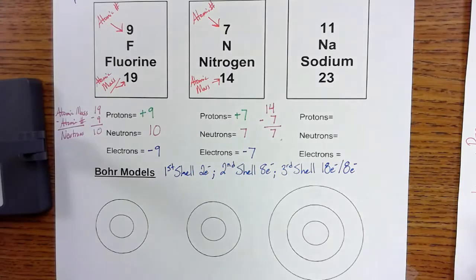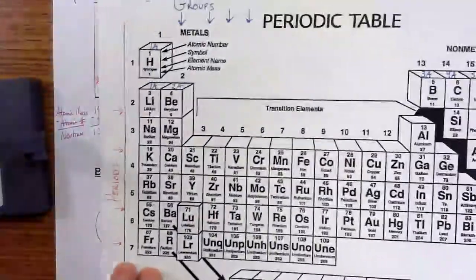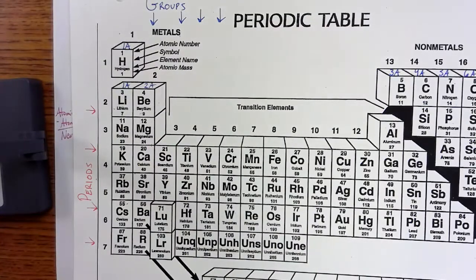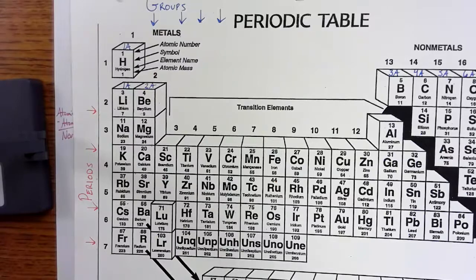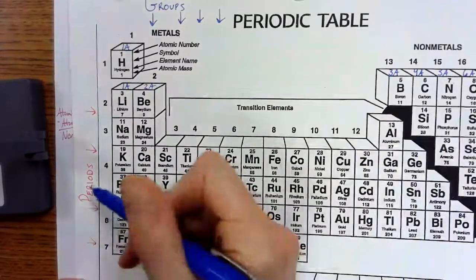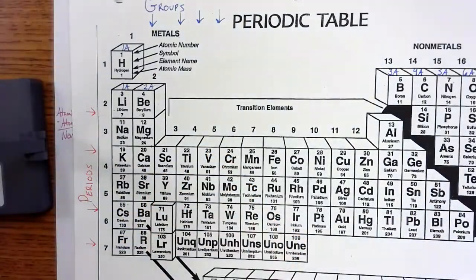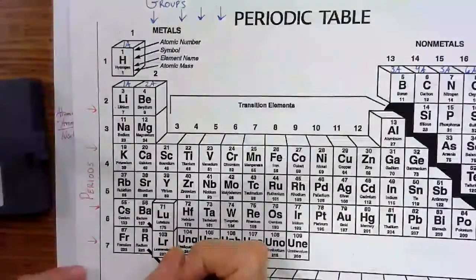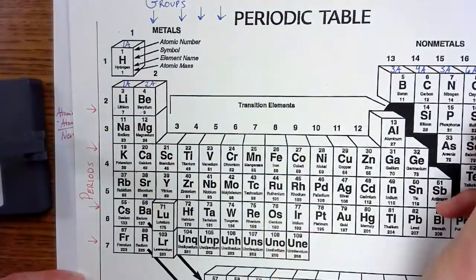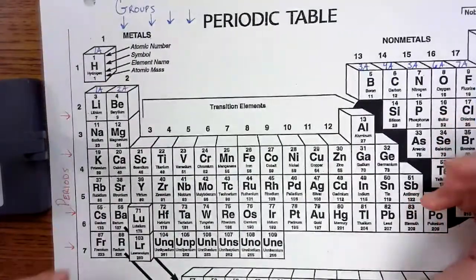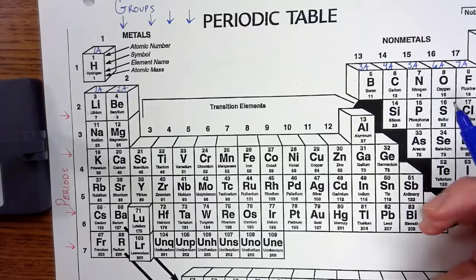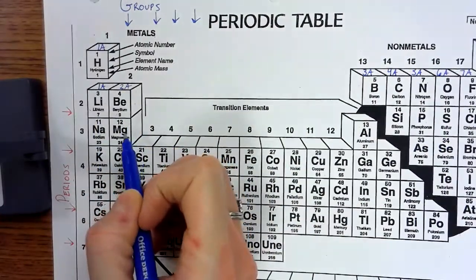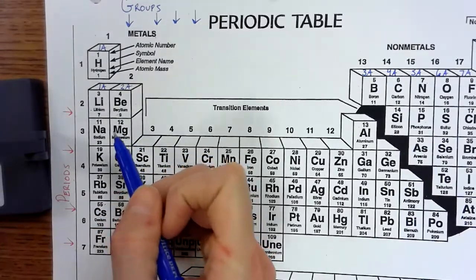Now, here's the nifty thing. Your periodic table, it's a little cheat sheet. It tells you how many shells you need, how many orbitals you need for that element. That's what the periods are for. So each period tells you how many layers, how many levels you need for your atom. So everything in period one, hydrogen and helium, only needs one orbital, one shell. All the elements in period two, lithium, beryllium, boron, carbon, nitrogen, oxygen, fluorine, neon, all need two shells.